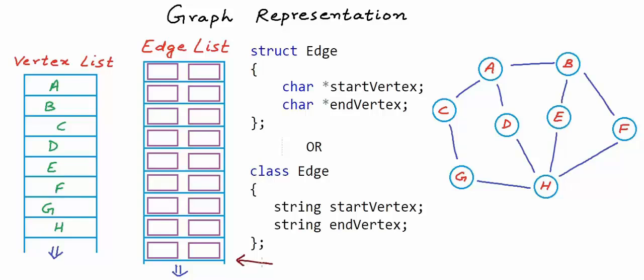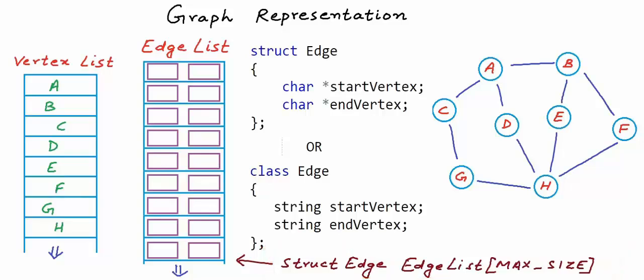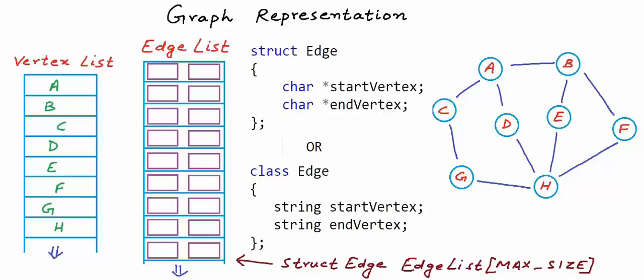EdgeList would basically be an array or list of this struct edge type. In the two definitions of edge I've written here, in the first one I've used character pointers, because in C we typically use character pointers to store or refer to strings — we could use a character array also. In C++ or Java, where we can create classes, we have string available as a data type. So we can use any of these for the fields — character pointer, character array, or string — depending on how you want to design your implementation.